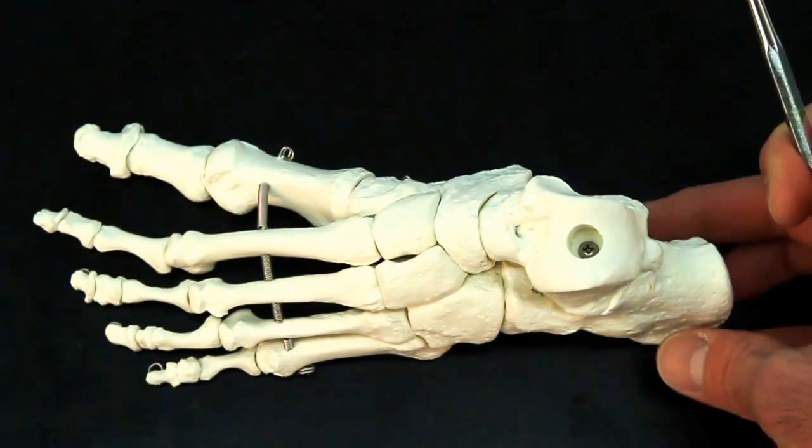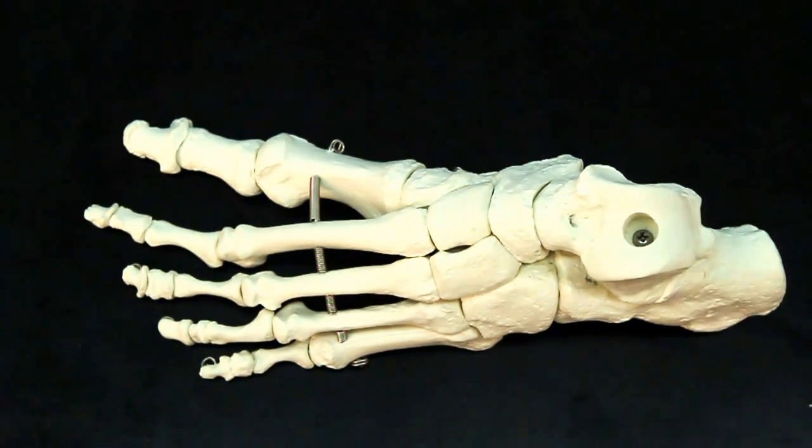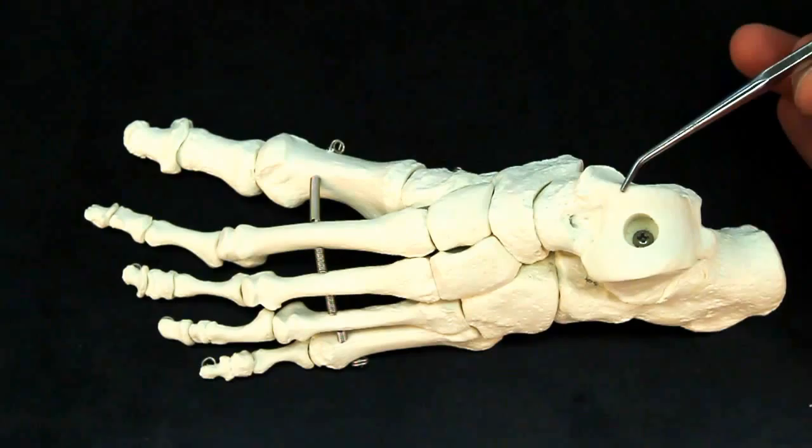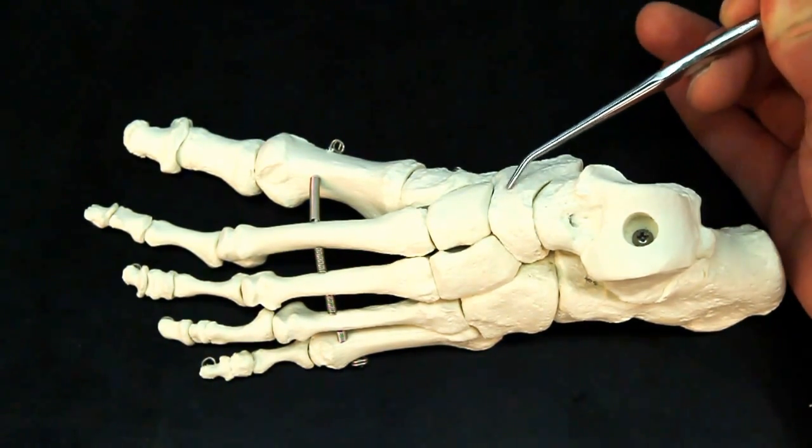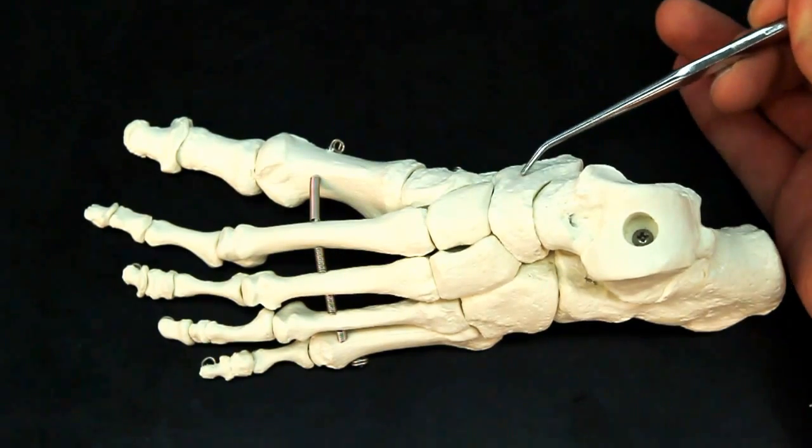Now if you have a superior view here, if you come just a little bit in front of the talus here, this bone is the navicular.